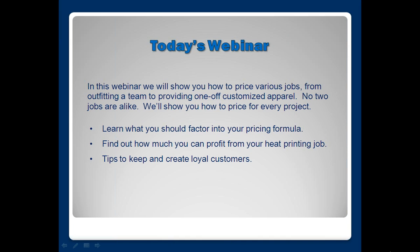We're going to talk about what items you should factor into your pricing formula. The main things to consider are your overhead — including labor for the person doing the heat printing, all equipment being used, any supplies needed to decorate your items, the cost of the item being decorated itself, and often freight when you have an item shipped to you. Shipping costs factor into all of that as well. And of course you want to factor in the cost of the decorating method itself.